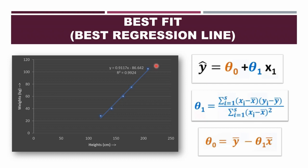The way to find the best fit, or best regression line, or best relationship between my dependent and independent variable, is using this formula: y-hat equals theta-0 plus theta-1 times x1. Here, theta-0 is my first coefficient and theta-1 is my second coefficient.